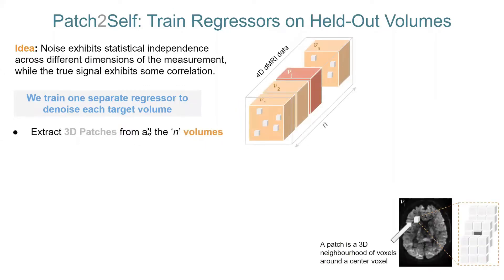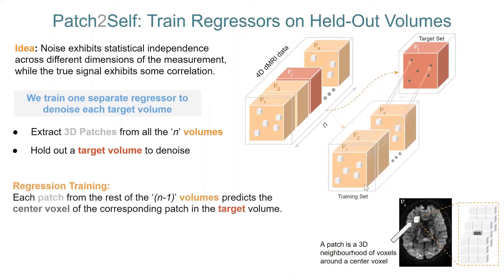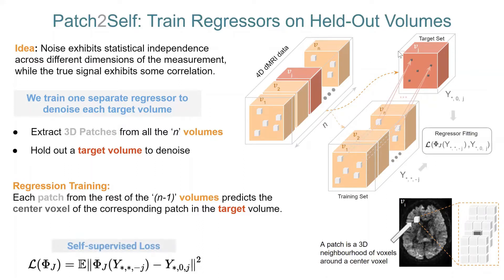So how that works is first, we extract 3D patches from all n volumes of the data. So let's say this is the 4D diffusion MRI data, where each orange box represents an independent gradient direction. We extract a 3D patch for each voxel in this entire volume, and we do that for all volumes. And a 3D patch is nothing but a 3D neighborhood. It could be isotropic or anisotropic however you want. So for example, let's say this darkened gray voxel is the voxel around which we want to extract a neighborhood. You give a patch radius and you extract it. Then we say that we will hold out one gradient direction, which we want to denoise, and using the rest of the n minus 1 gradient directions, we will just predict this one. And to do so, we only predict the center voxel of the corresponding patches from the target volume. And this regression is a self-supervised loss. So it is nothing but the mean squared error that is being minimized between the training set and the target volume that we want to denoise.